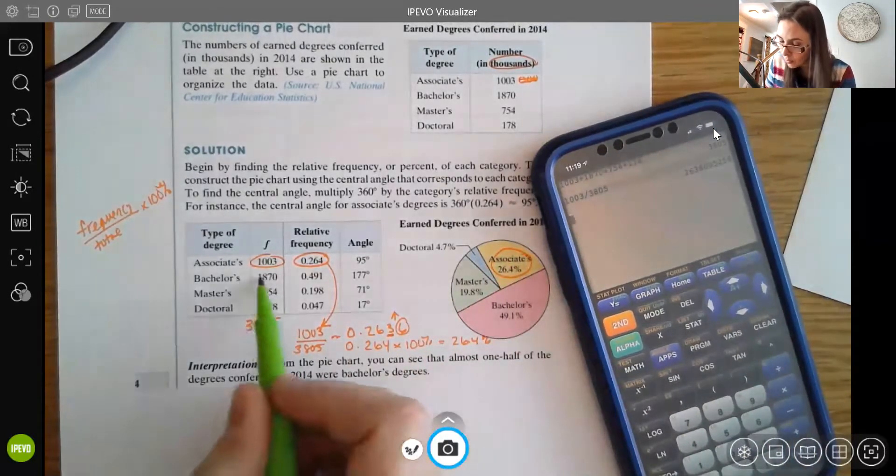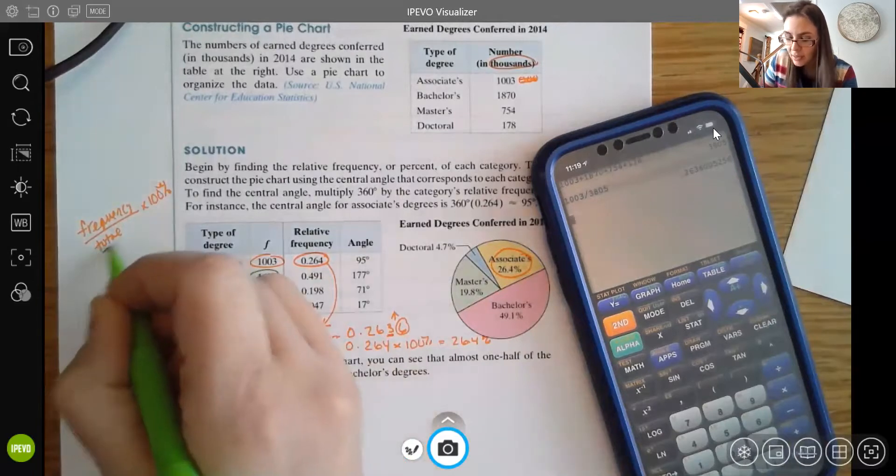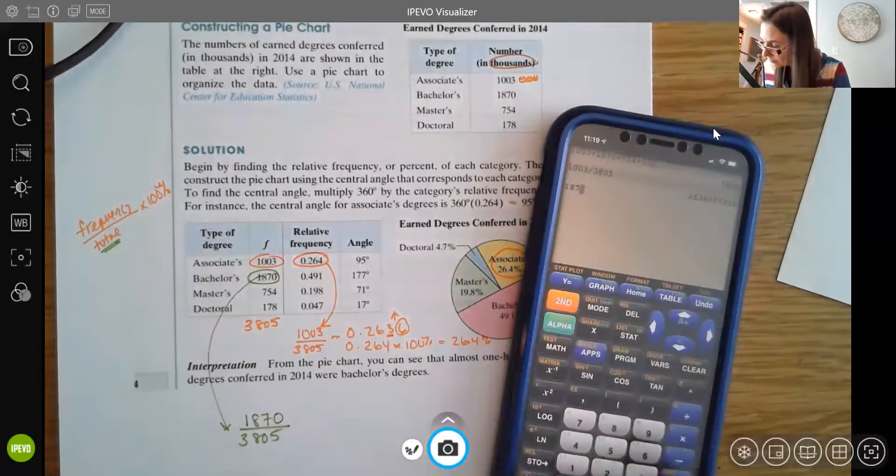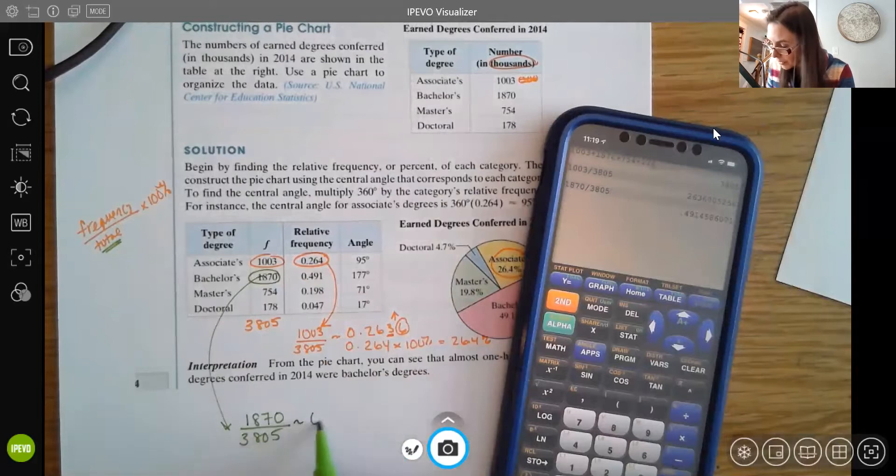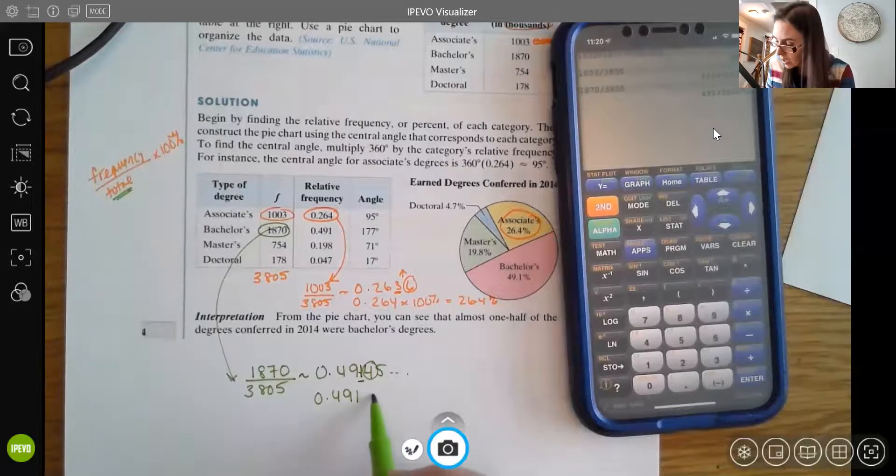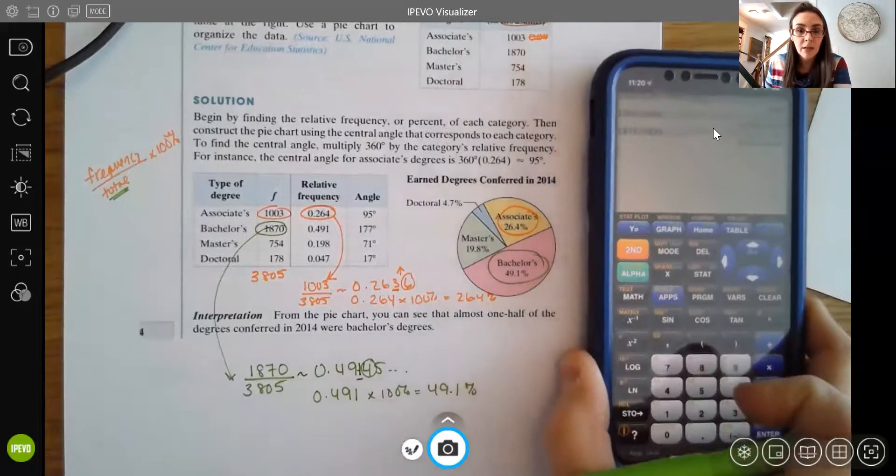We can find that percent by just multiplying that by 100%. And that's how they get the 26.4%. And it's the same thing for the other ones. Let me just do one more. So let's say for the bachelor's degree, I take whatever the number is for the bachelor's, and then it's always the total on the bottom. So 3,805. I get about 0.49145. Again, they're rounding to three decimal places here. So when I use the next number of 4, it's small. So that value is going to stay. I get 0.491. And if I want a percent instead of just the relative frequency, all I do is multiply that by 100. And that's how they get the 49.1%.